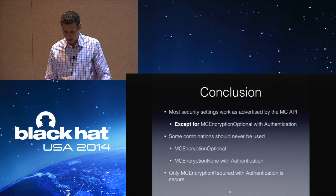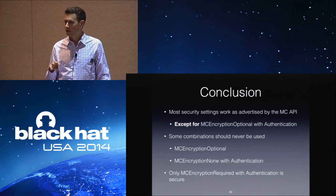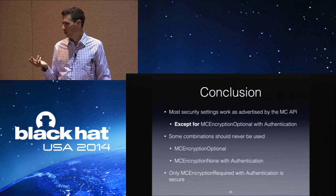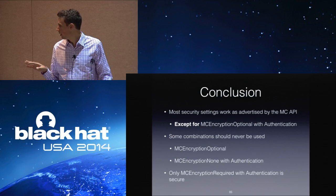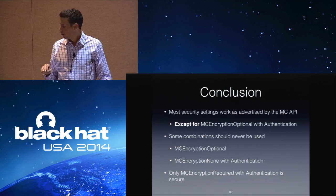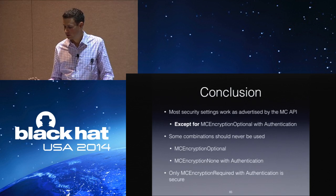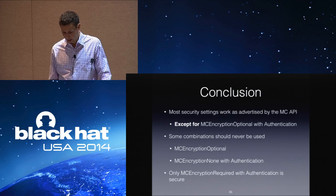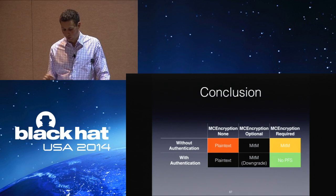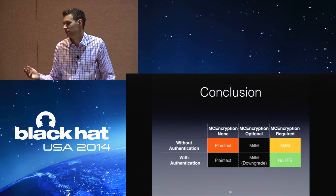Overall, most of the security settings work as the documentation says, except for the one I just described. Even without that, there are combinations that as a developer you shouldn't use. Encryption optional has no good use case — data is sensitive or not sensitive, it's not optionally sensitive. Encryption none with authentication means you're getting the performance hit of DTLS because you have to do all the handshake, but then no encryption. And as expected, only encryption required with authentication is actually secure. You shouldn't use all the dark cells in the table because there's no good use case, and the red and orange ones are vulnerable.